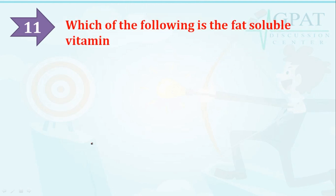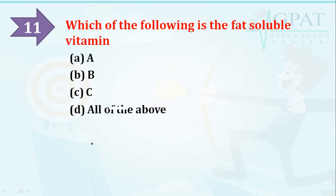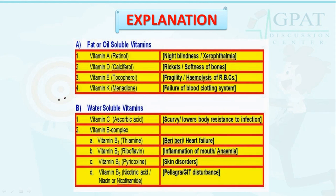Question number eleven: which of the following is the fat-soluble vitamin? Options are: A, B, C, or all of the above. The right option is A. There are two types of vitamins: fat/oil-soluble vitamins (Vitamins A, D, E, and K) and water-soluble vitamins (Vitamin C and Vitamin B complex).